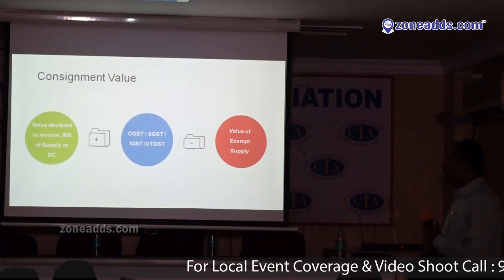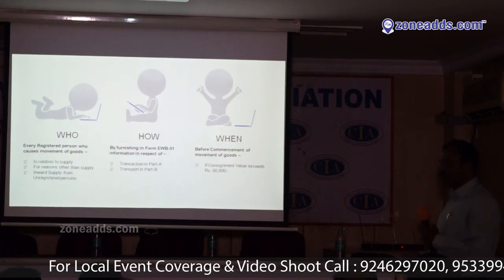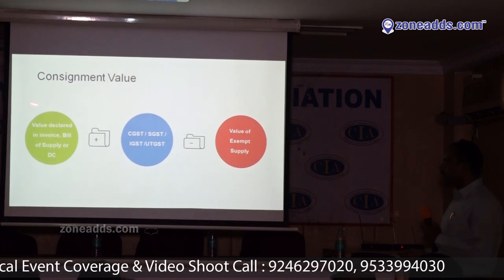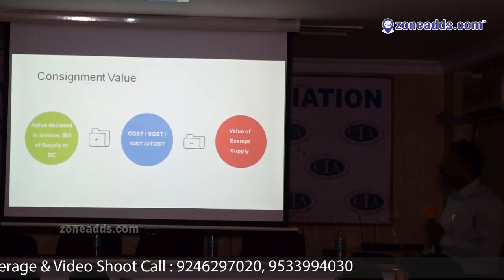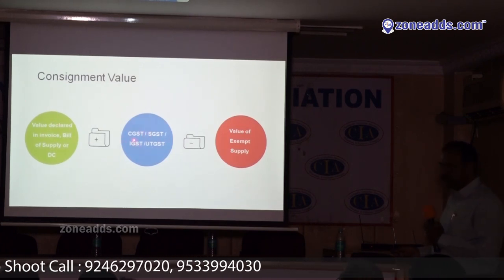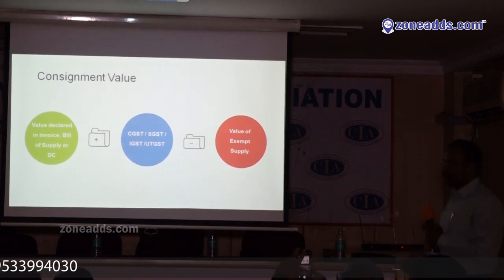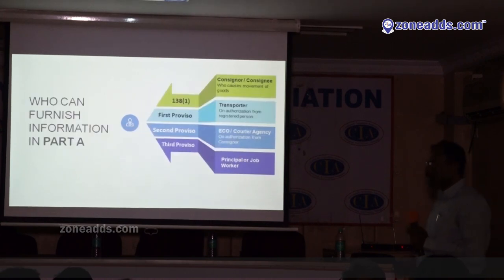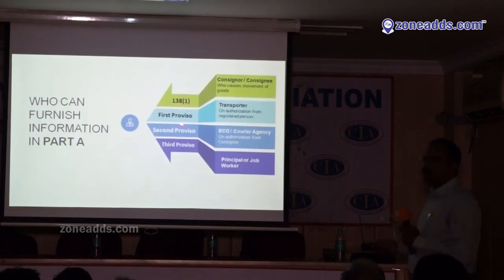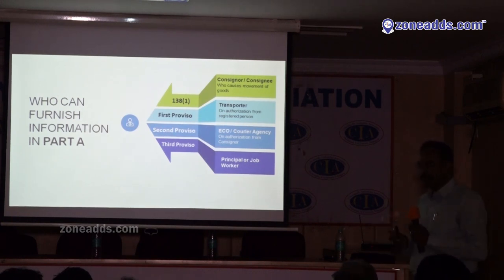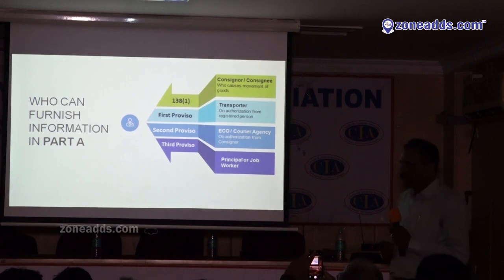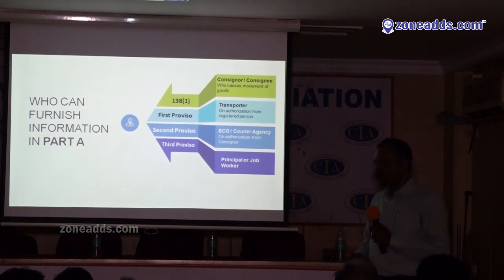The consignment value is the value declared in the invoice plus taxes minus value of exempted goods. Who can furnish the information? As per rule 138, the consignor or consignee who causes the movement of the goods. The customer can also generate the E-way bill if he is the reason for movement. The transporter can also generate it, and authorized registered persons — whether supplier or customer. Courier agencies or e-commerce operators can also generate on authorization.